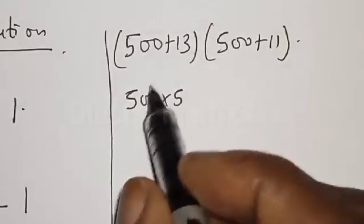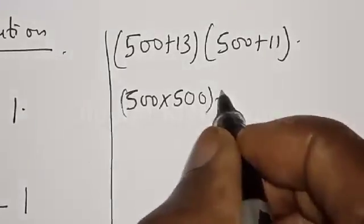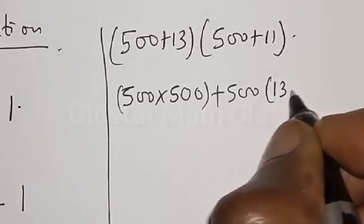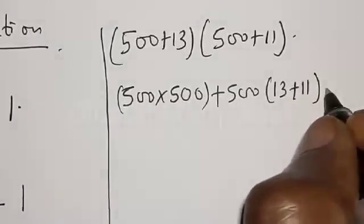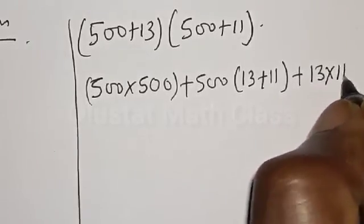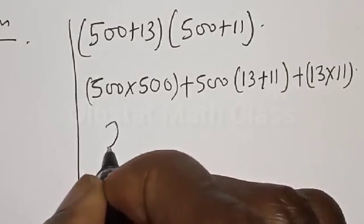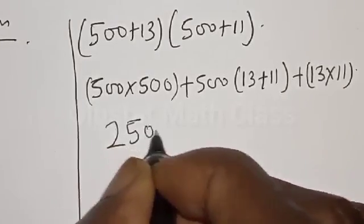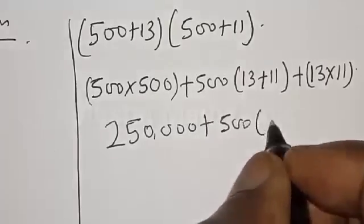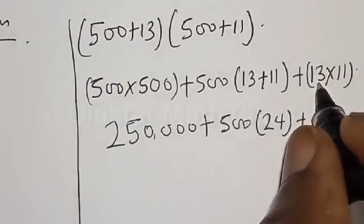From here we expand: we have 500 multiplied by 500, plus 500 into (13 plus 11), plus 13 multiplied by 11.